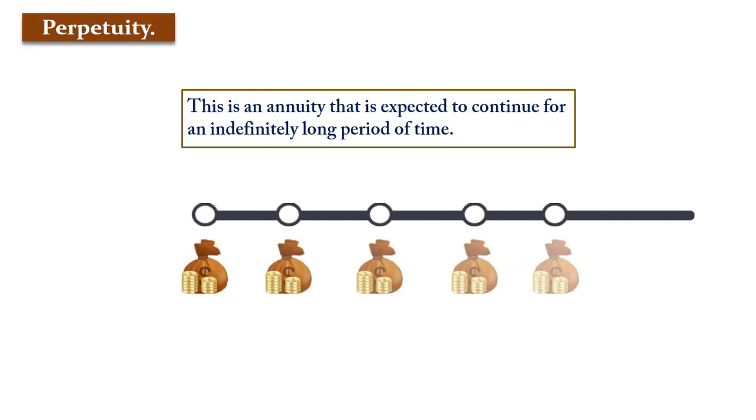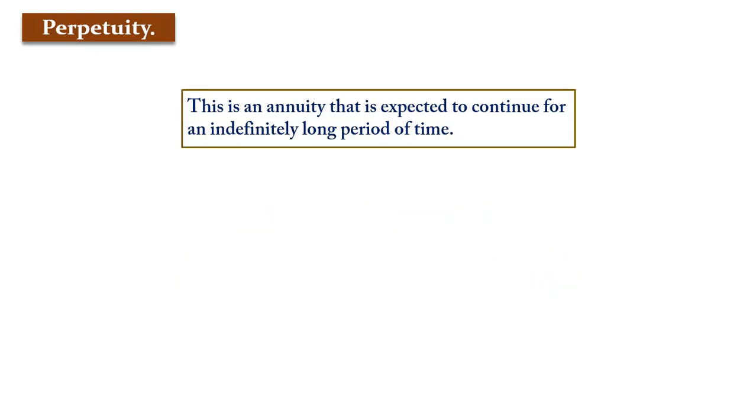Let's look at perpetuity. The annuity is when we know the number of years we are supposed to receive the fixed interest or fixed amount for. Perpetuity is when you are receiving the fixed amount for an indefinite period in the future. That is the difference.